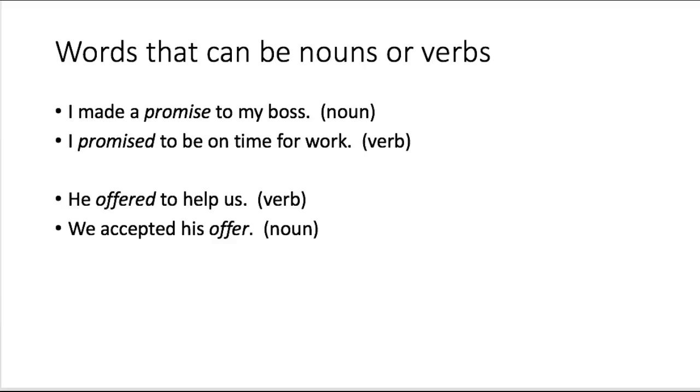So a lot of words in English can be both nouns or verbs. So for instance, I made a promise to my boss. In this case promise is a noun. Or I promised to be on time for work. Promised in this case is a verb. Another example: he offered to help us. Offered is a verb. We accepted his offer. In this case offer is a noun. So if a word can be both, you just have to be very careful in reading the sentence and figuring out its content.